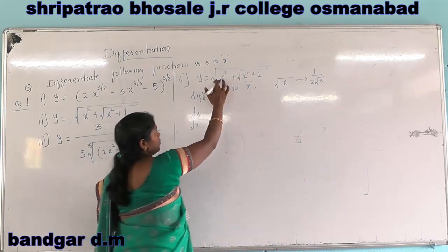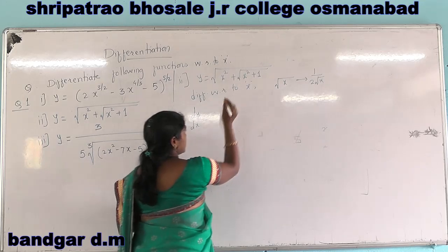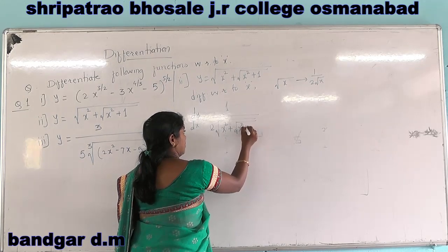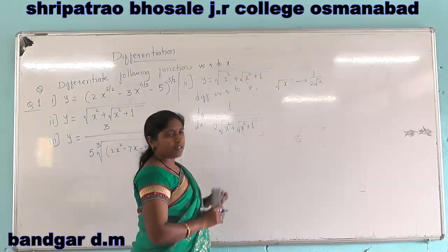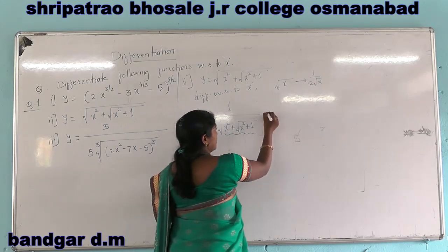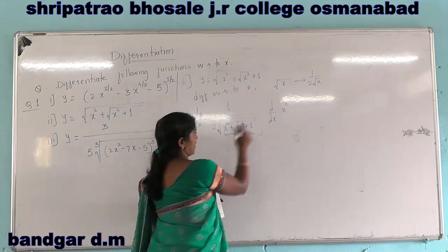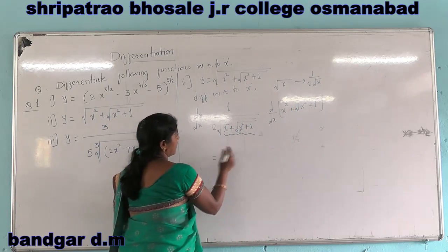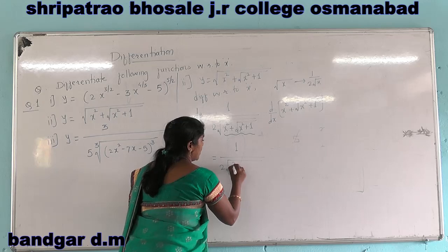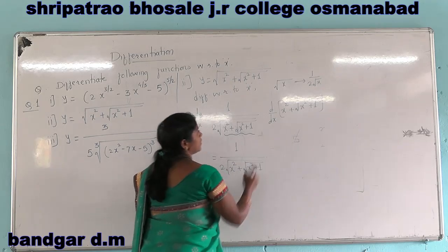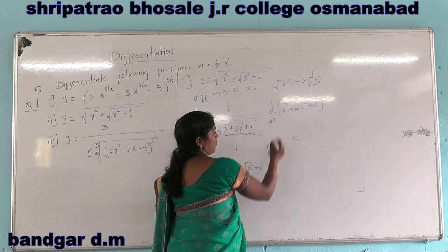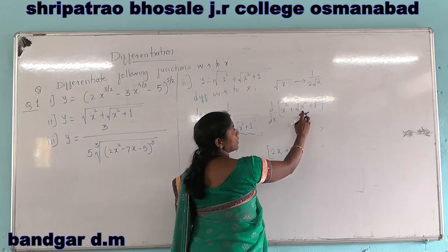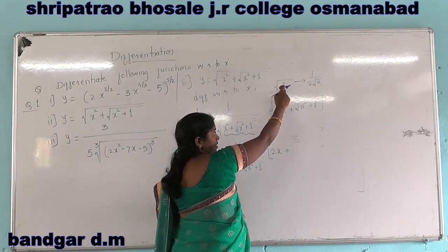Using this form, the derivative of under root of x squared plus under root of x squared plus 1: instead of x there is x squared plus x squared plus 1. So we differentiate this inner function. dy by dx equals 1 upon 2 root of x squared plus under root x squared plus 1, into derivative of x squared plus under root x squared plus 1, which is 2x.